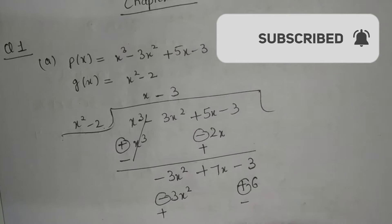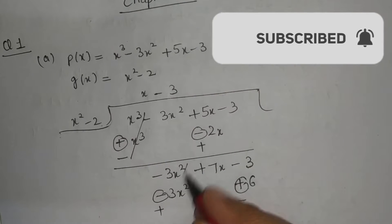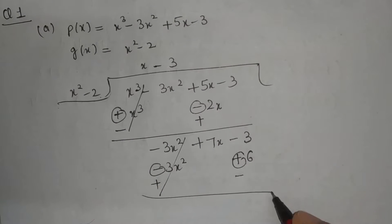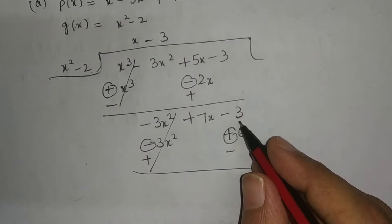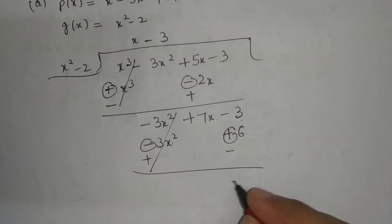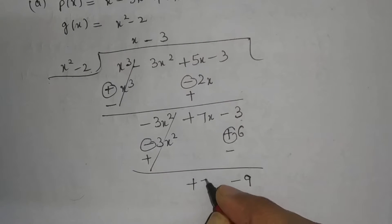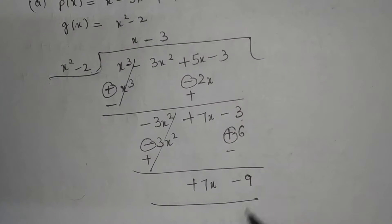Next step: we change the sign. One plus and one minus will cancel. Minus 3 and minus 6 will give 9, and here will come plus 7x.